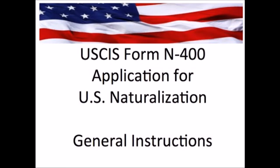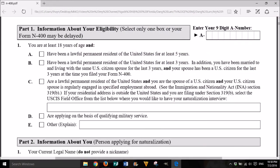Hello, today we're going to go over the USCIS Form N-400, which is the application for U.S. naturalization for U.S. citizenship. This video is going to go over the general instructions for completing the form. Part 1: Information about your eligibility.